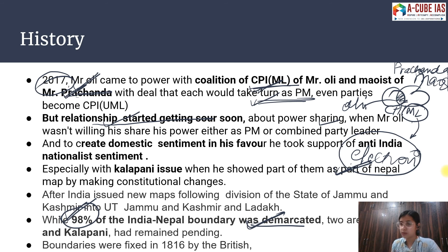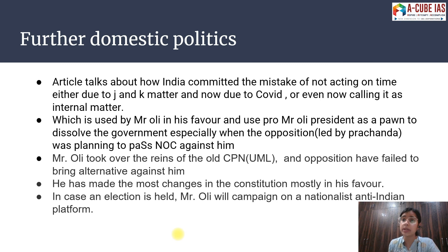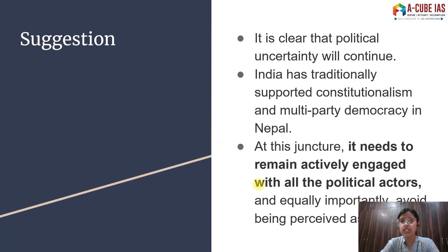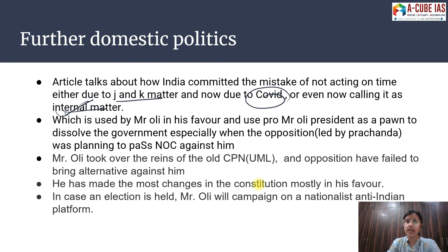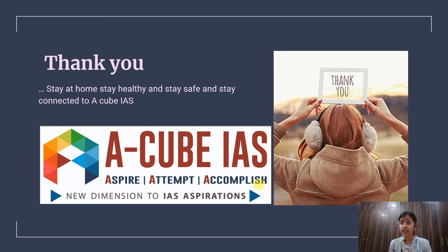About 90 percent of India-Nepal's border is demarcated and agreed upon, but the Kalapani area remains contested. This boundary was fixed in 1816 when Lord Hastings was the Governor General. Mr. Oli used the Kalapani dispute to build anti-India sentiment and garner votes. The article concludes that India has always made the mistake of not acting on time — first JNK, then COVID, calling it an internal matter. The suggestion is that the Indian government should actively engage with all parties, as engagement can be a solution.